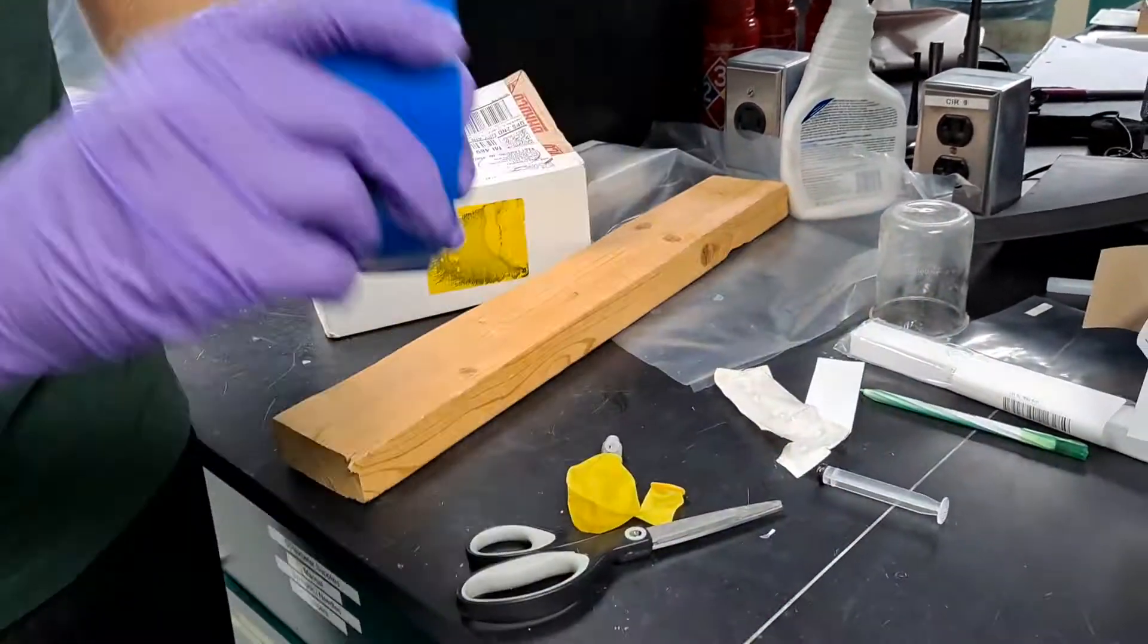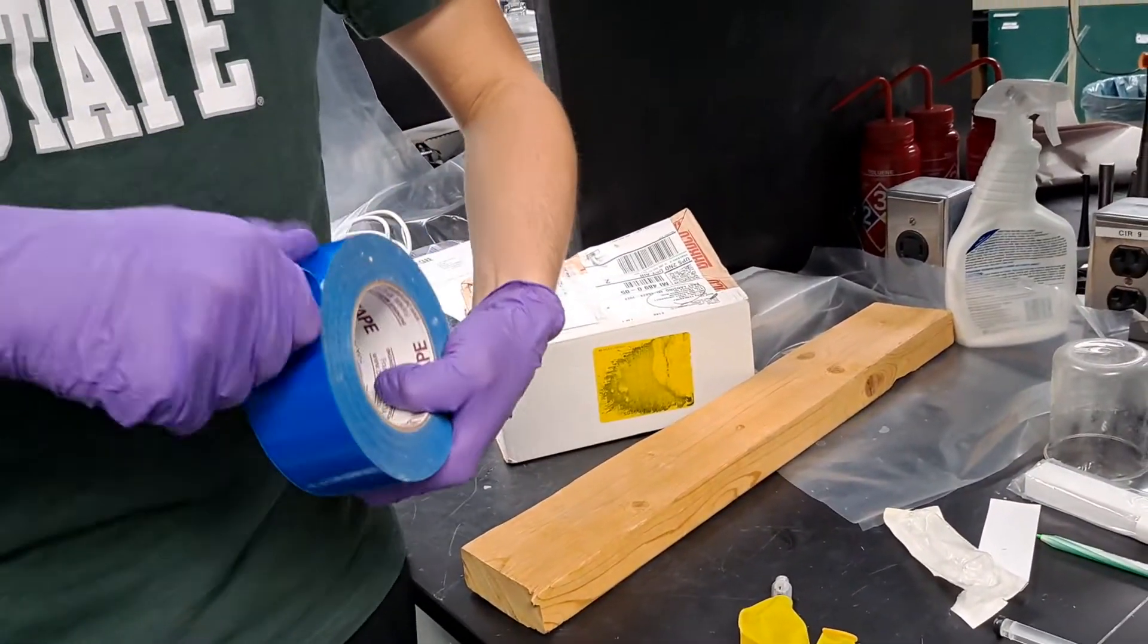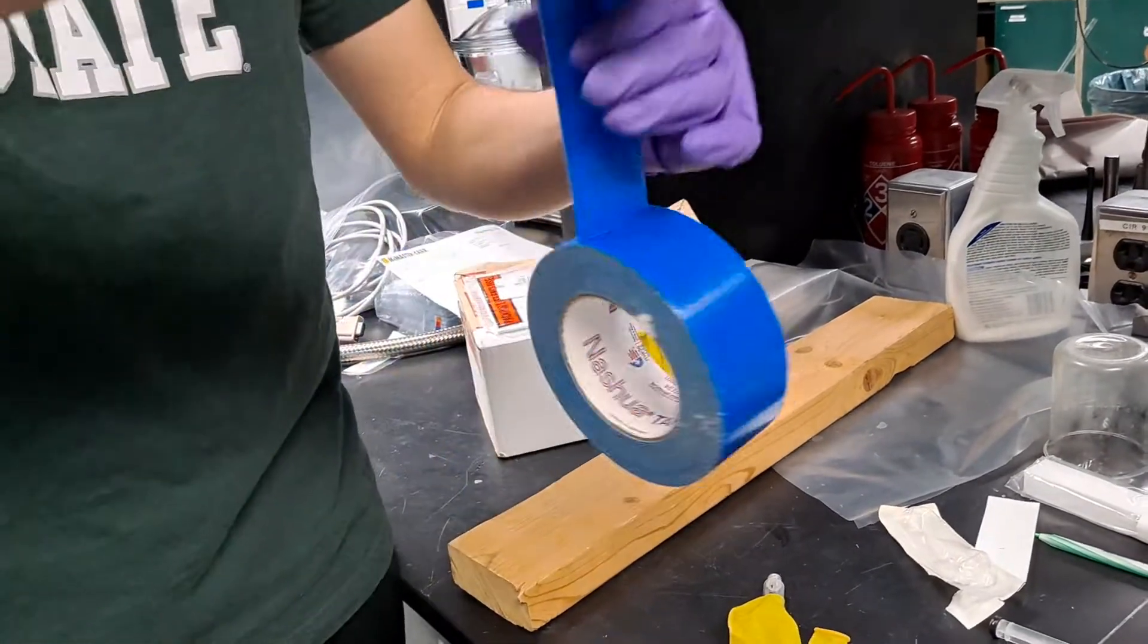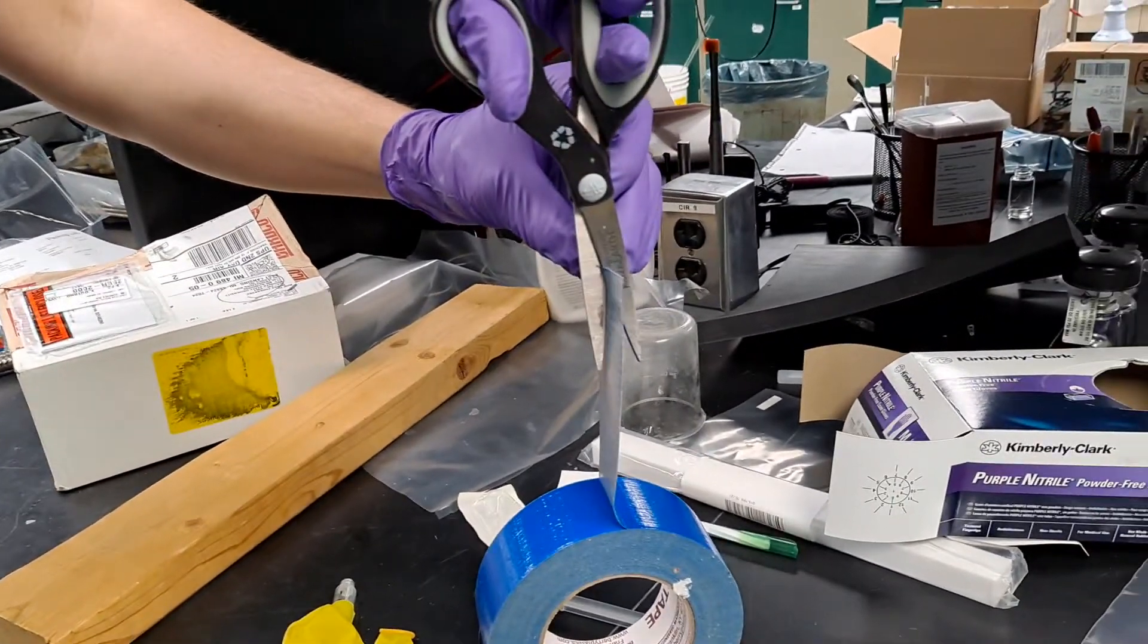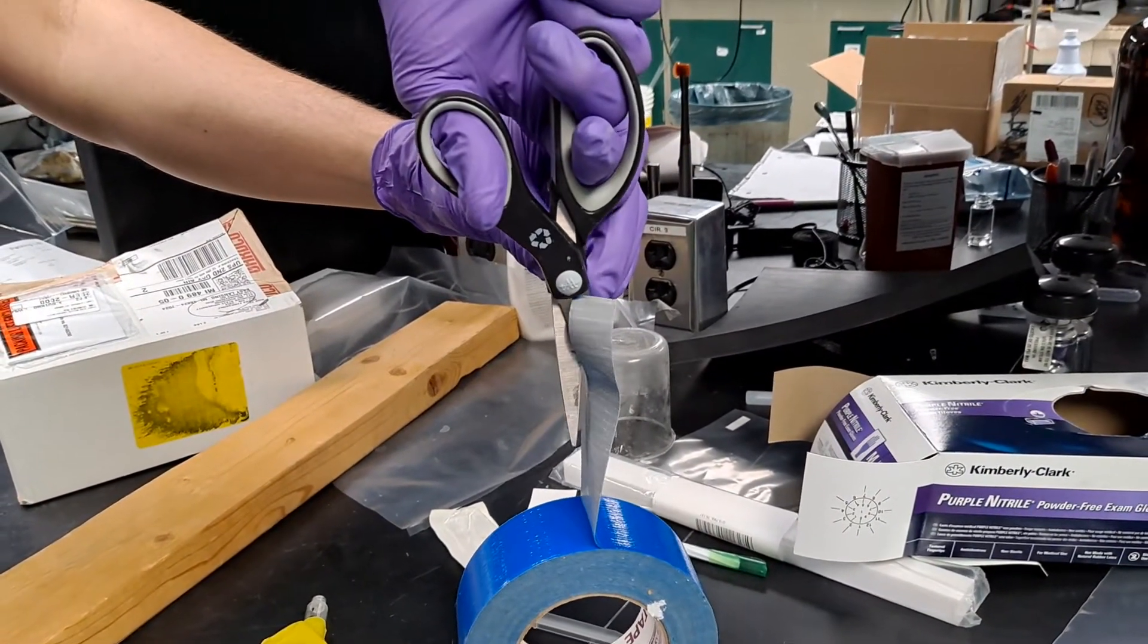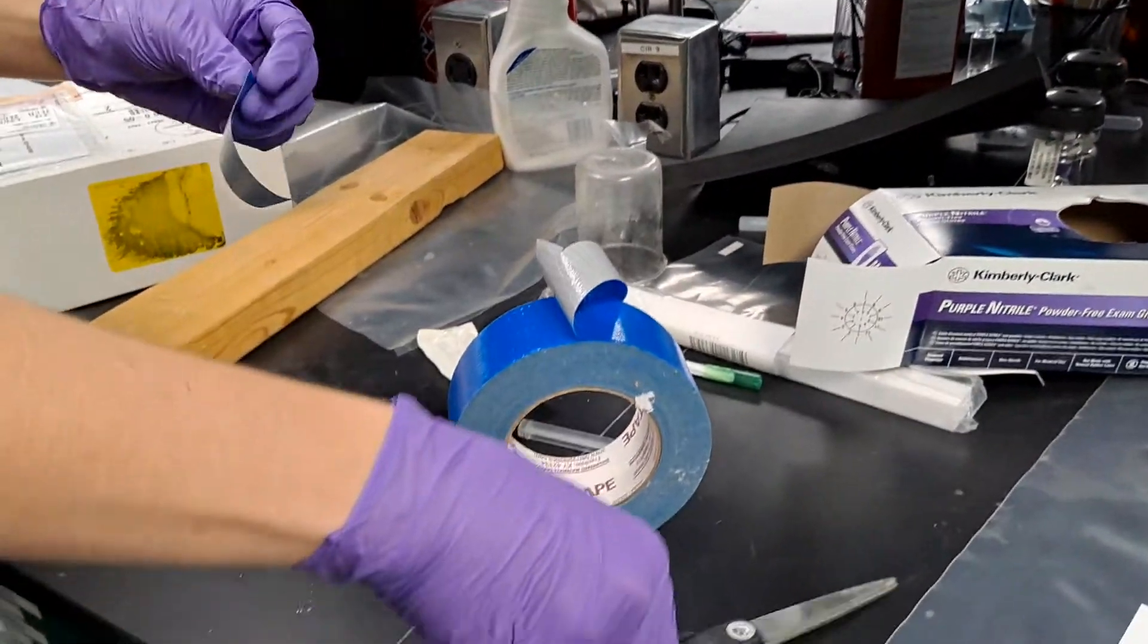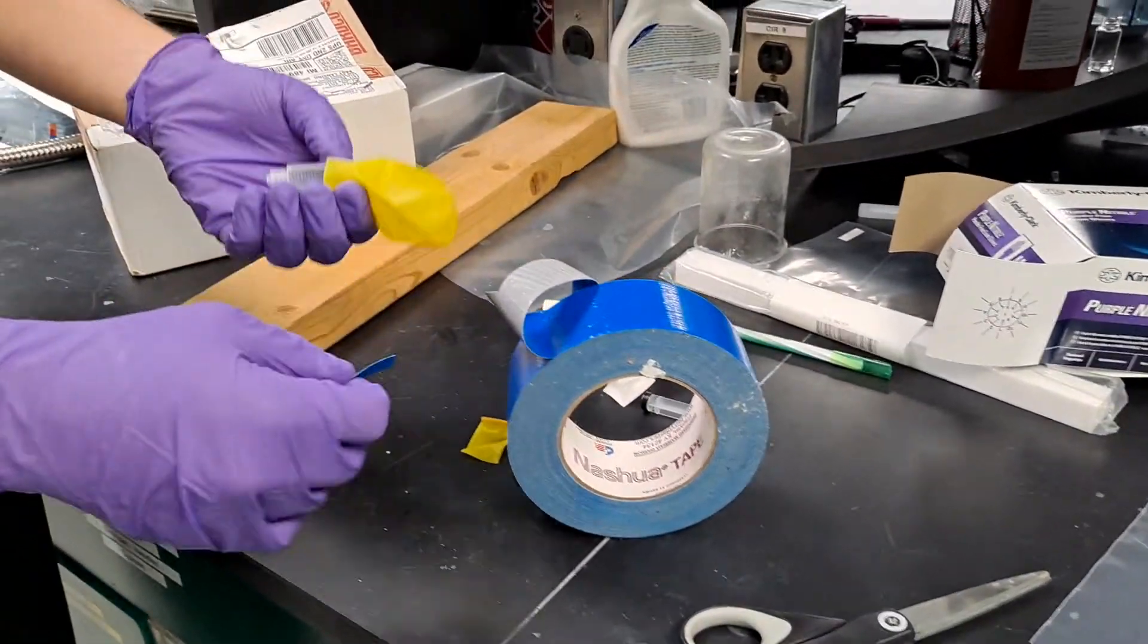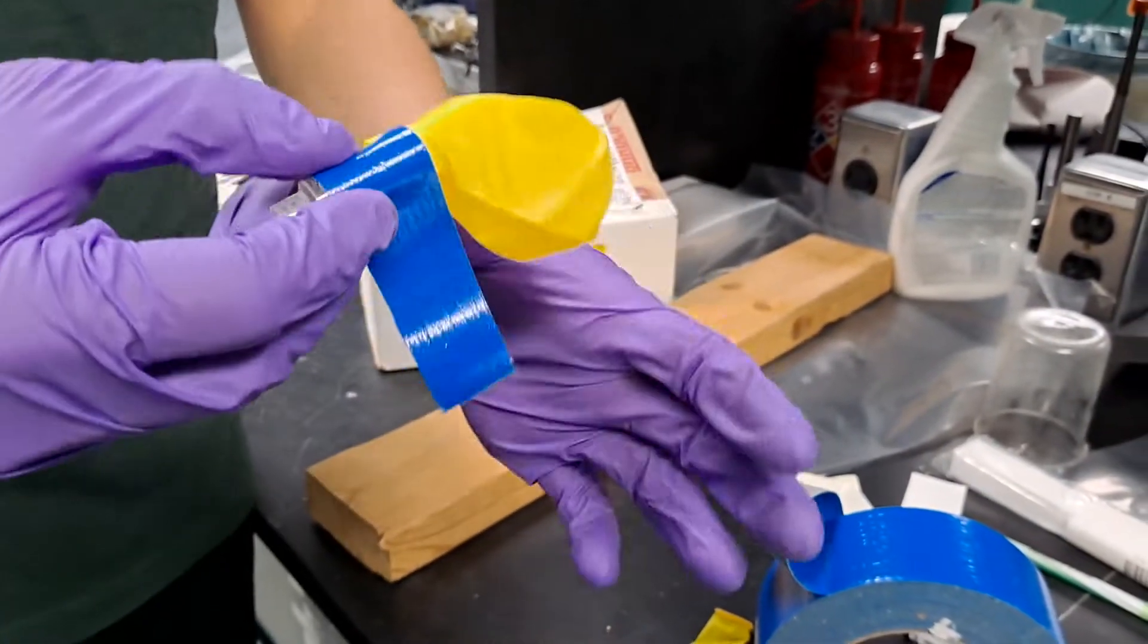And then the next step is to seal it. So what you do is take some duct tape, and a thinner strip usually works. You wrap it around and make sure you get a good seal on it.